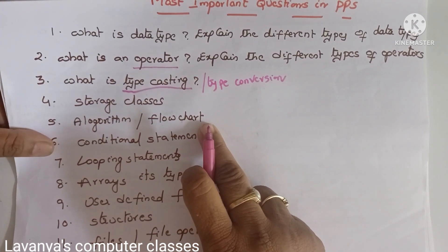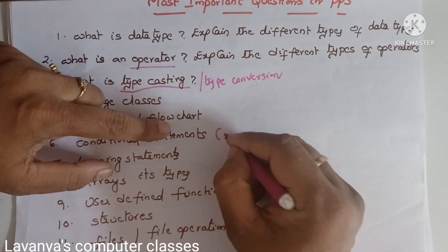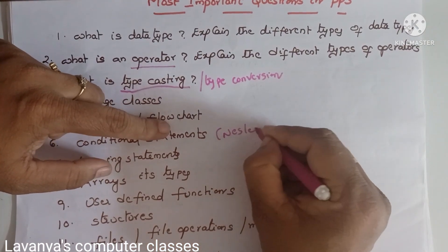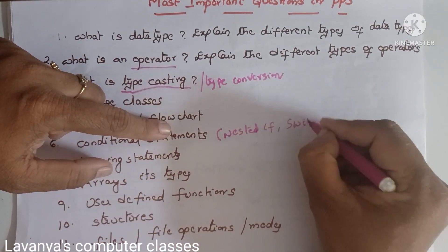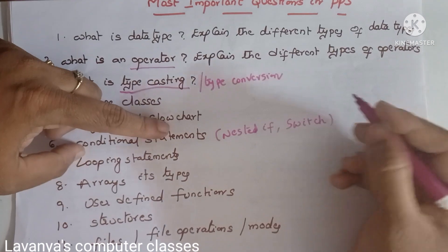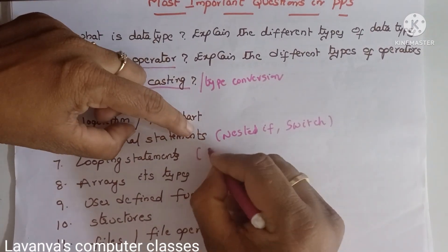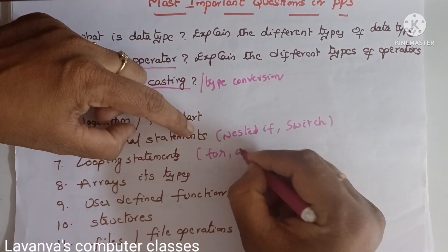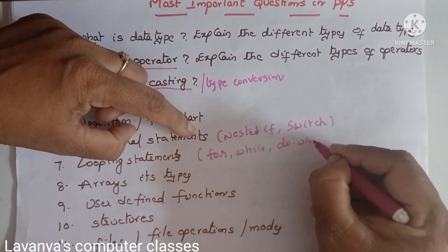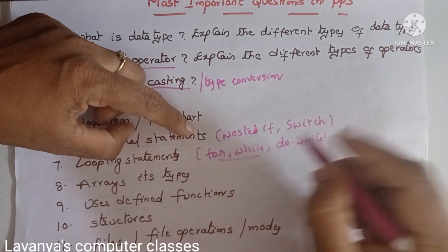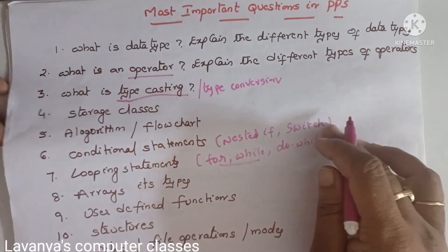Next are conditional statements. You need to learn nested if and also switch statements. Following that are looping statements: for loop, while loop, and do-while loop. Mostly programs come from for loop and do-while.